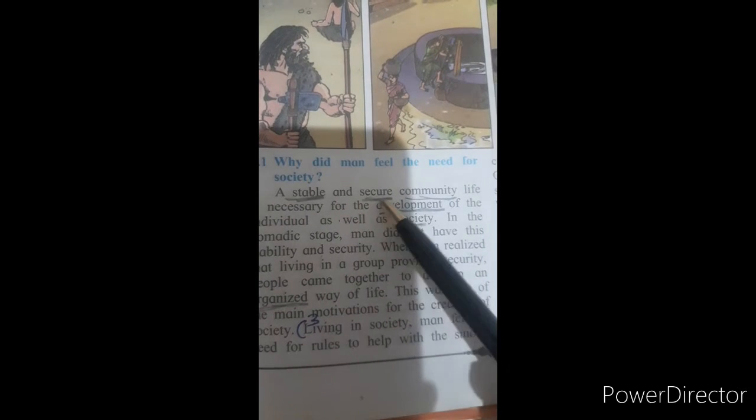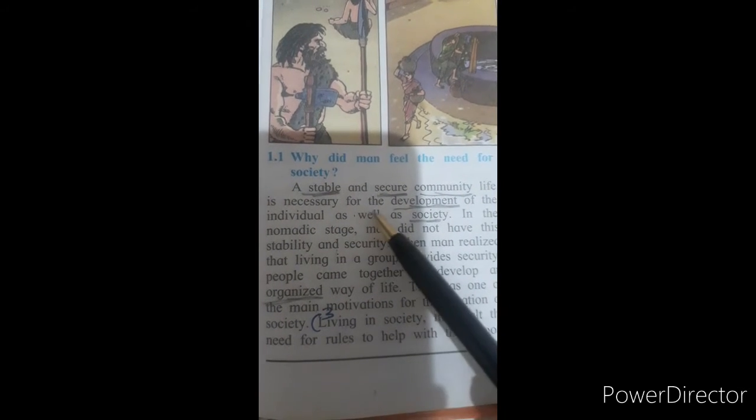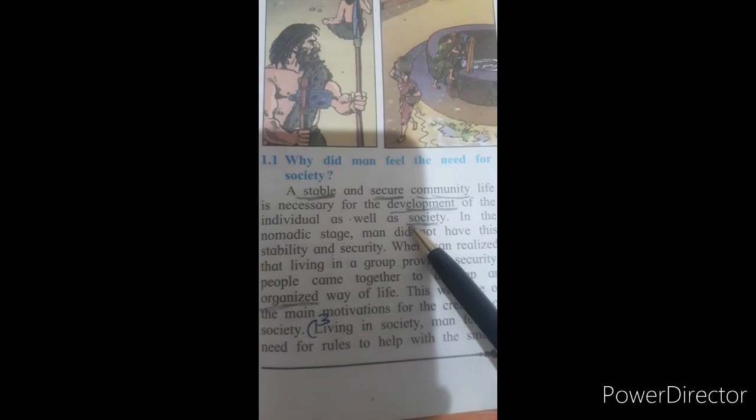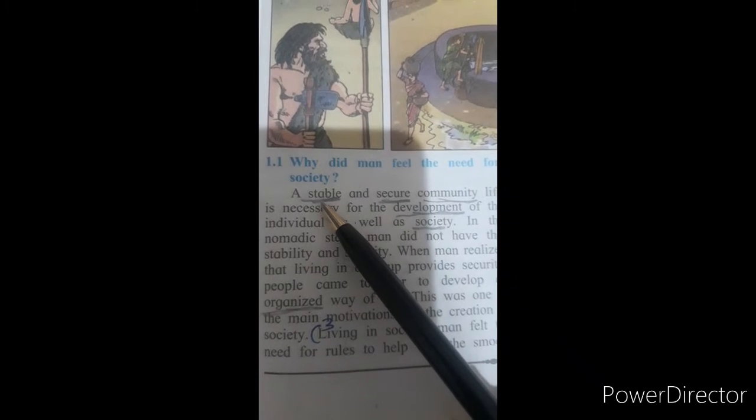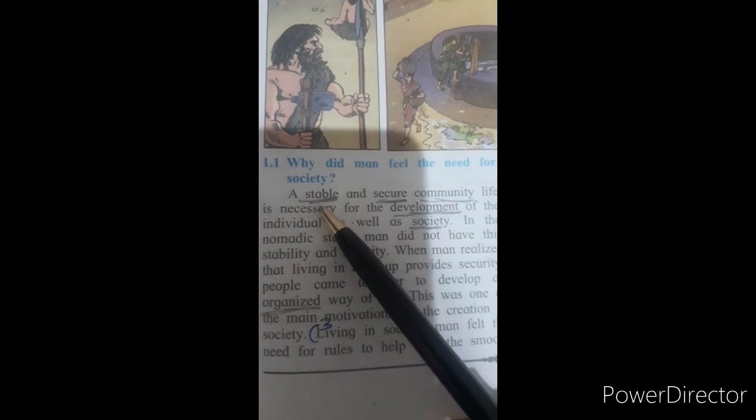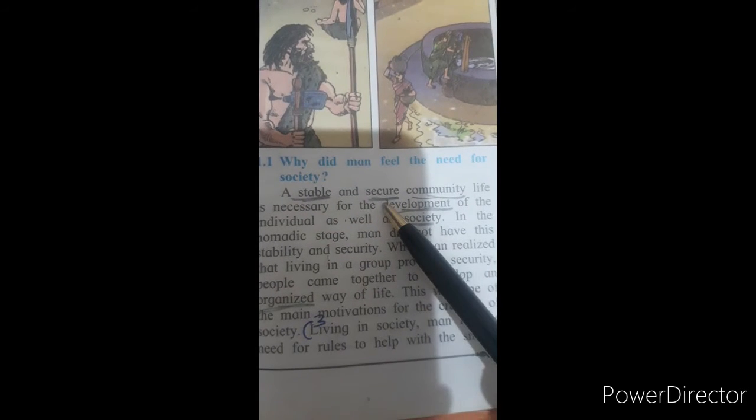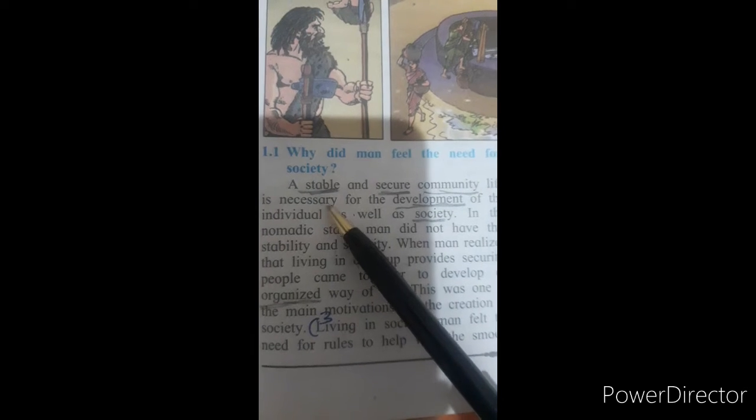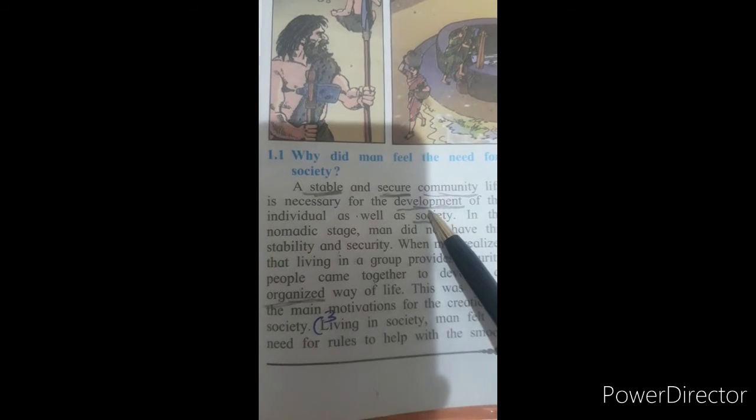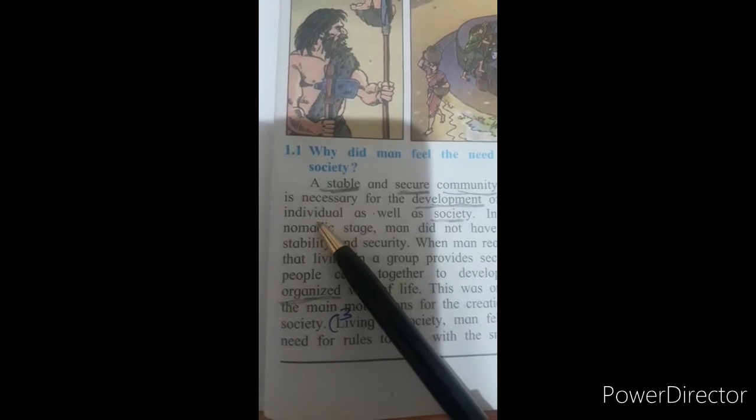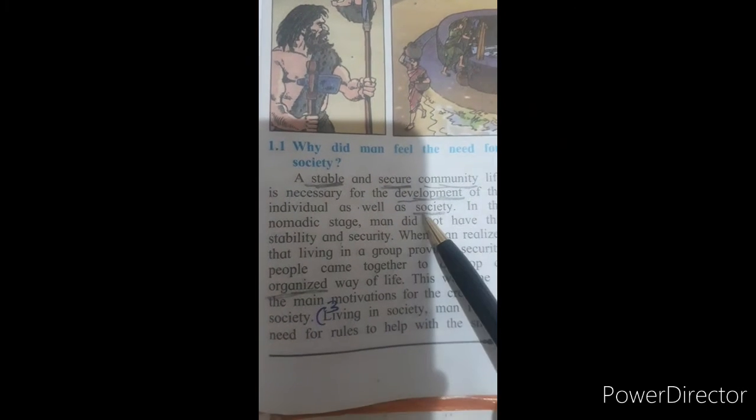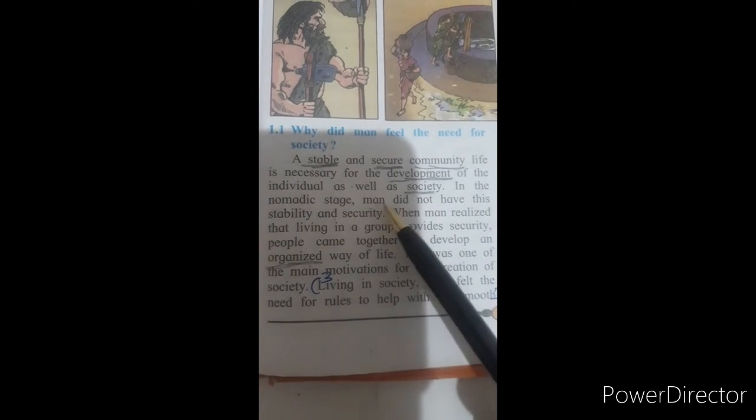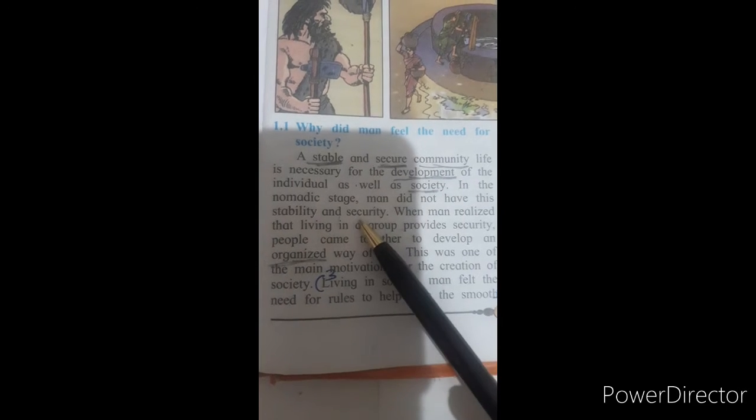A stable and secure community life, it is necessary for the development of the individual as well as society. Stable means to stay at one place. And for secure community life, it was necessary for the development of the individual, for ourself as well as society's development. In the nomadic stage, man did not have this stability and security.